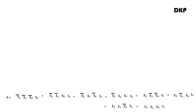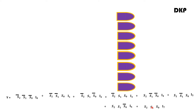Now we have to draw the logic diagram from this logic expression. The first step is to check how many product terms there are. This is in SOP (sum of products) form. There are 8 product terms, so we need 8 AND gates. 8 AND gates have been drawn here.